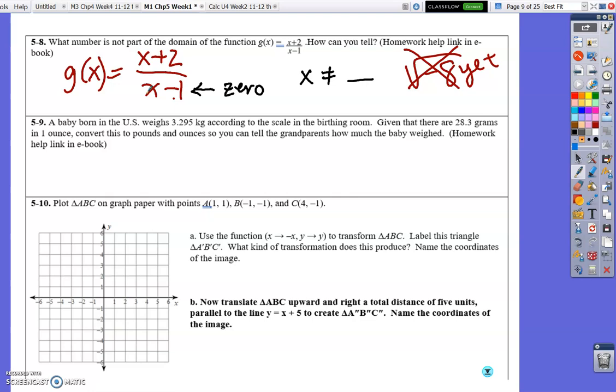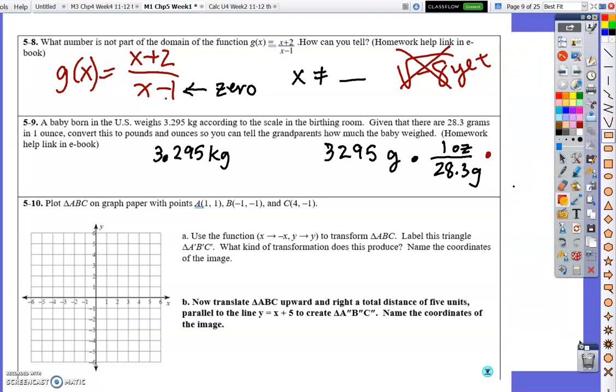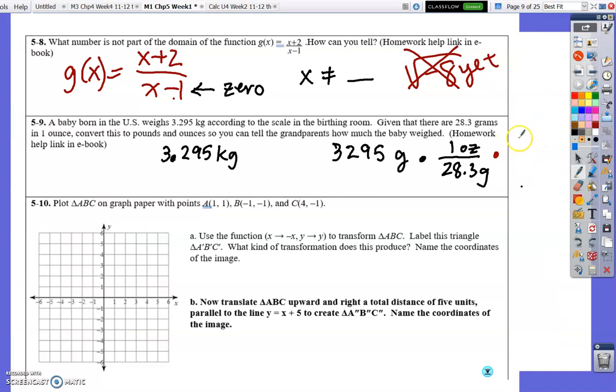All right, a baby born in the U.S. weighs 3.295 kilograms, according to the scale in the birthing room, given that there are 28.3 grams in one ounce. Convert this to pounds in ounces so you can tell grandparents how much the baby weight. All right, so 3.295 kilograms is 3,295 grams. You just have to multiply by 1,000 to change that. There are, if I want to convert to ounces, one ounce and 28.3 grams. So I'll take care of grams. Then I need to convert to pounds. And so that will be one pound is 16 ounces.